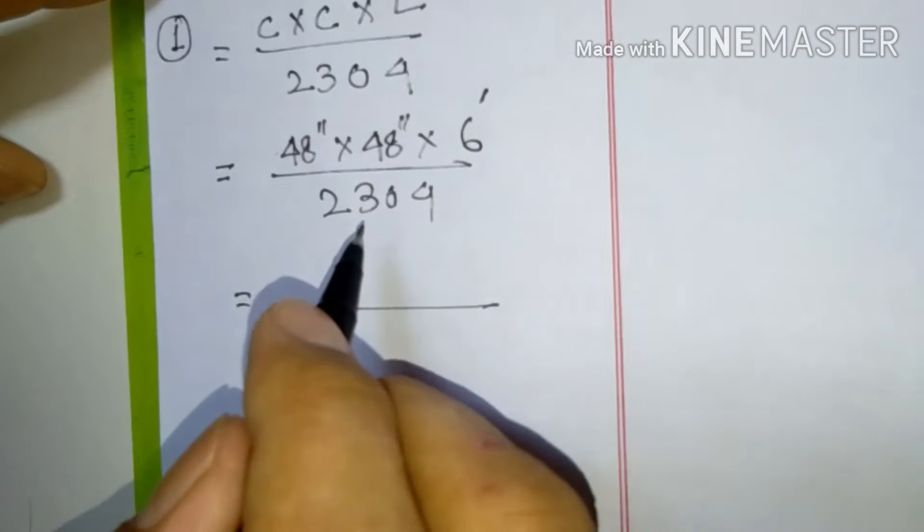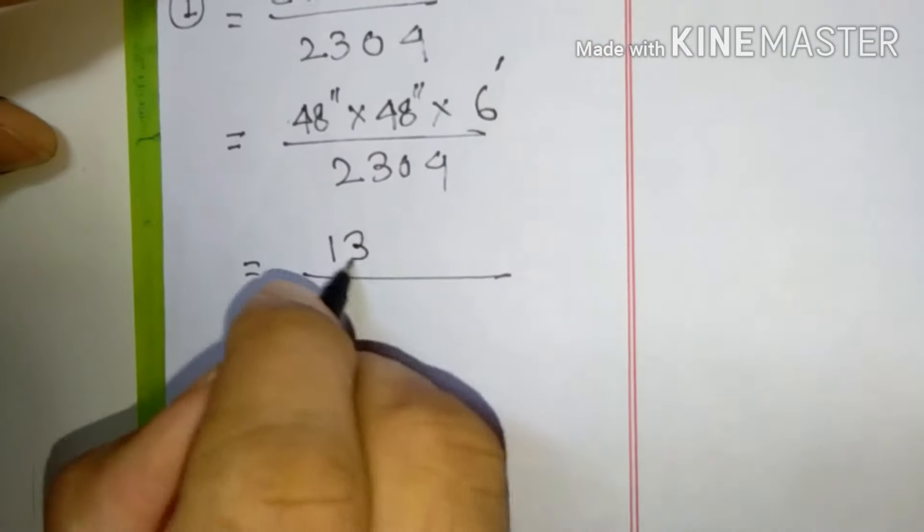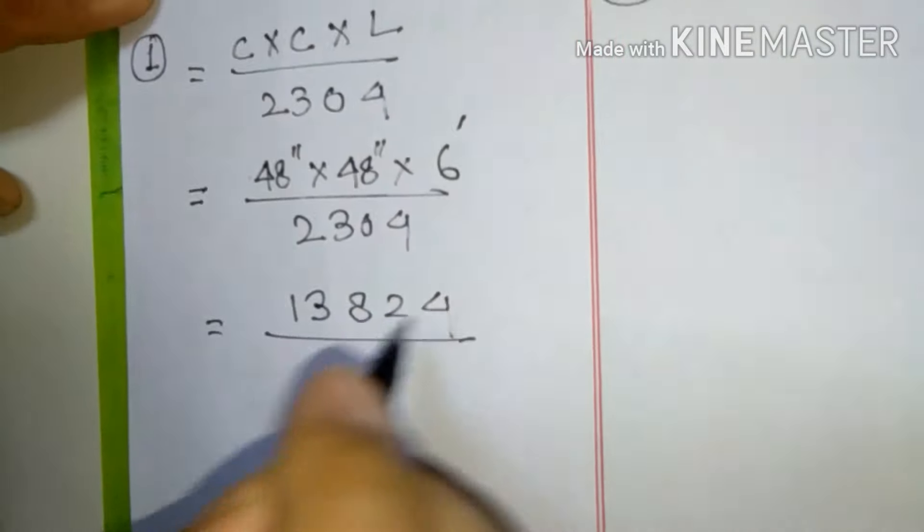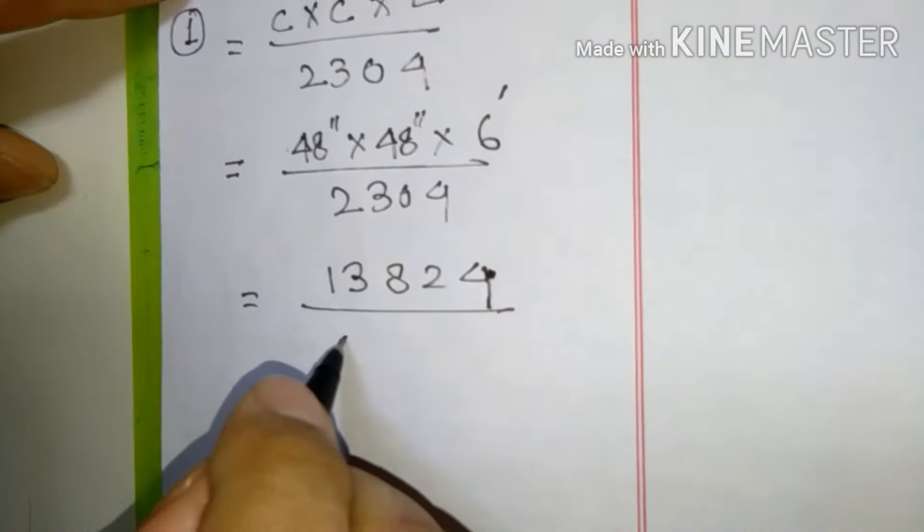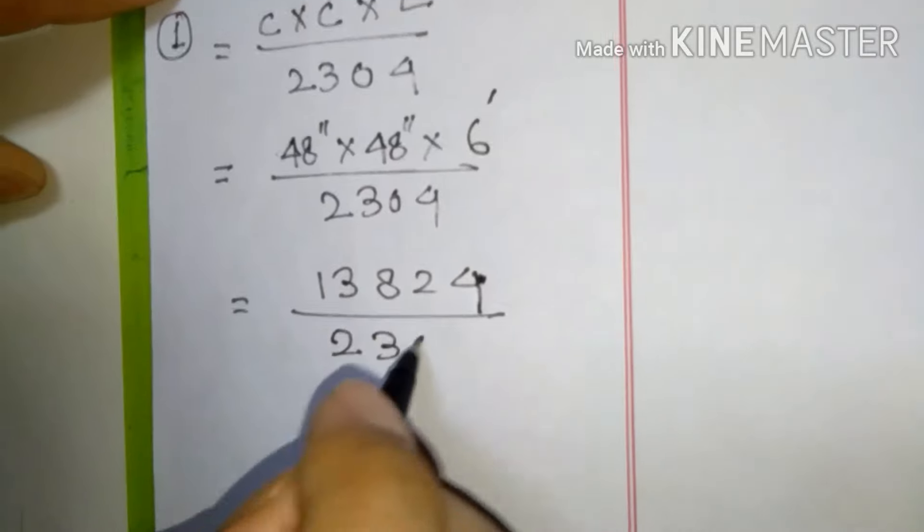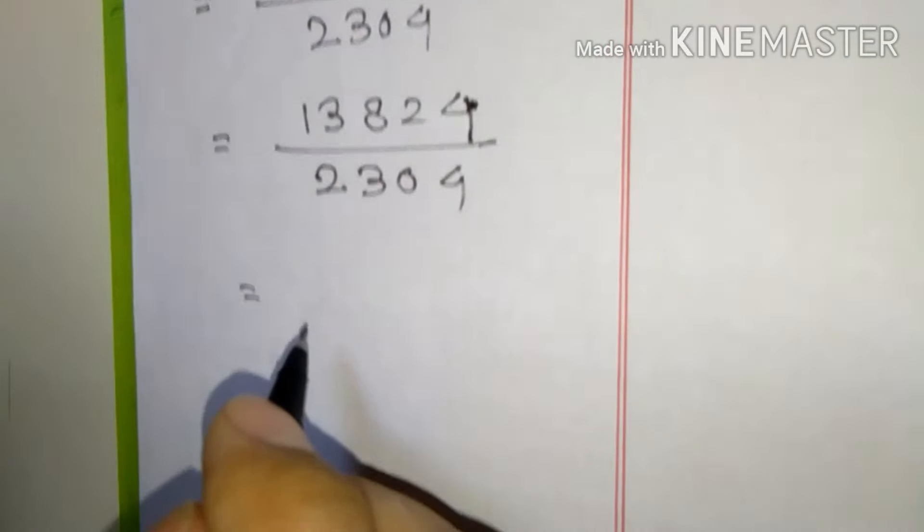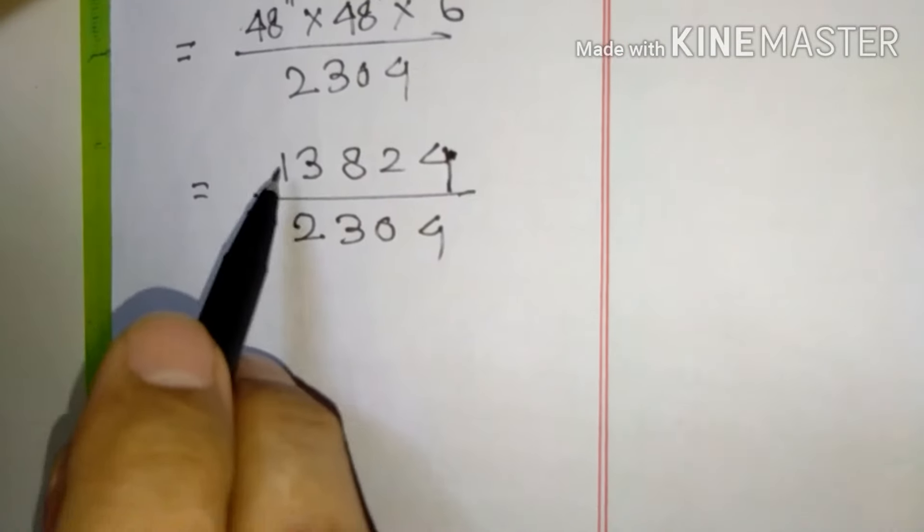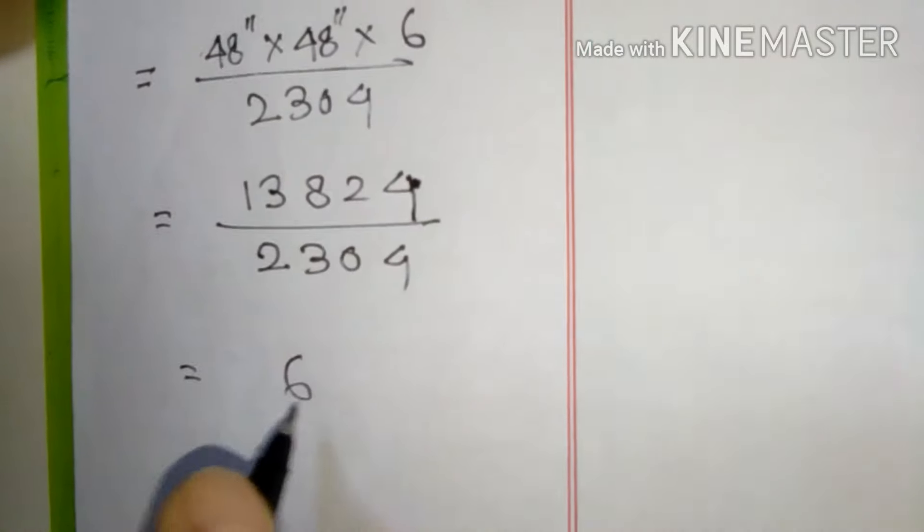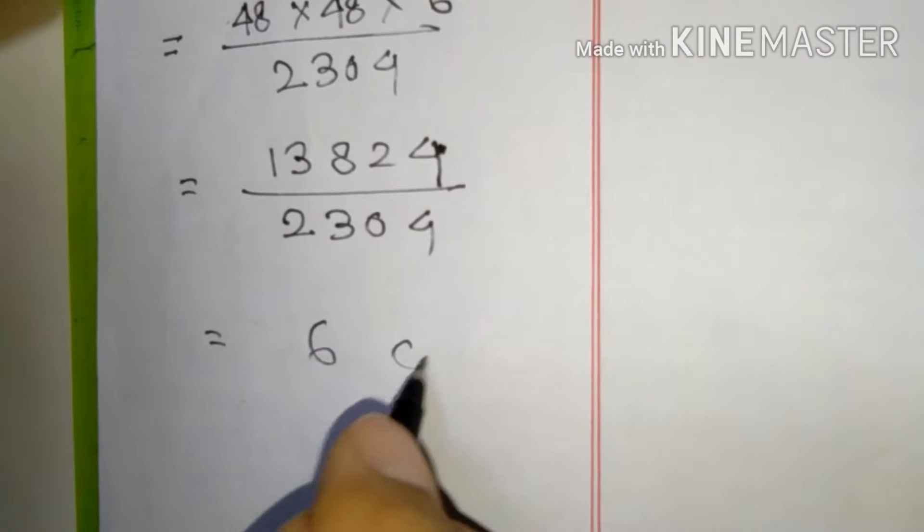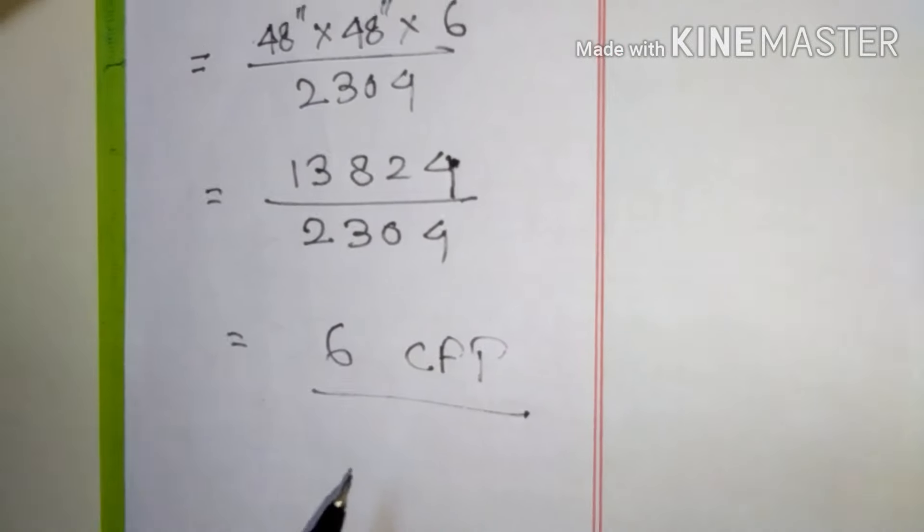If you calculate in a calculator we will get 13824. And this 13824 we have to divide by 2304. When you divide, dividing 13824 by 2304, you will get 6. 6 means 6 CFT, 6 cubic feet.